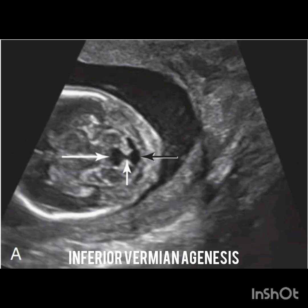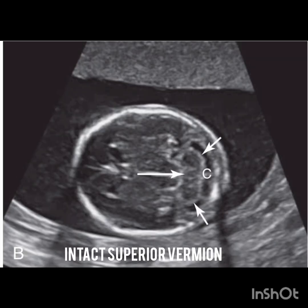Now discussing inferior vermian agenesis: in this axial image at 18 weeks of gestation, you can see the inferior portion of the posterior fossa showing a prominent fourth ventricle indicated by the long white arrow, communicating with the cisterna magna indicated by the black arrow, across a defect in the inferior portion of the cerebellar vermis indicated by the short white arrow. There is no large posterior fossa fluid collection, which is a key component of Dandy Walker malformation.